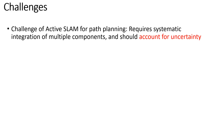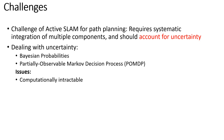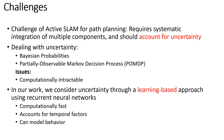The challenge of active SLAM is twofold. First, it requires systematic integration of multiple components such as vision or high- and low-level controls, and second, it should account for uncertainty. Dealing with uncertainty can traditionally be done using Bayesian probabilities or a POMDP; however, these methods tend to be computationally intractable or not feasible in an online setting. In our work, we consider uncertainty through a learning-based approach using recurrent neural networks, because they are computationally fast, can account for temporal factors, and can model an agent's behavior with the environment.